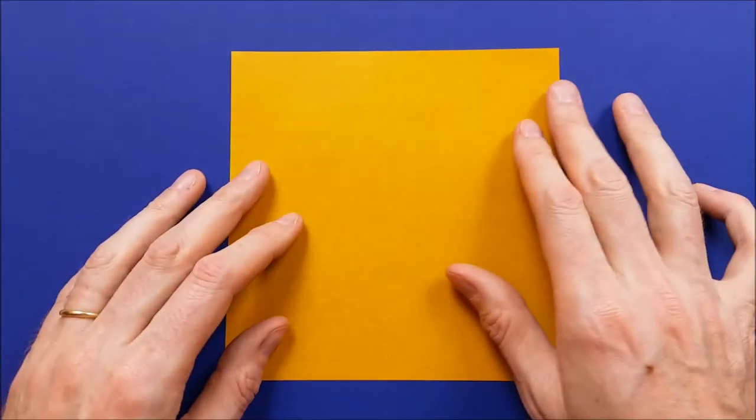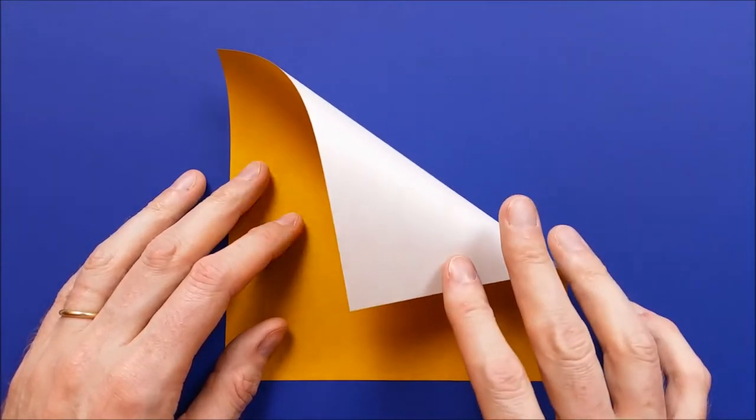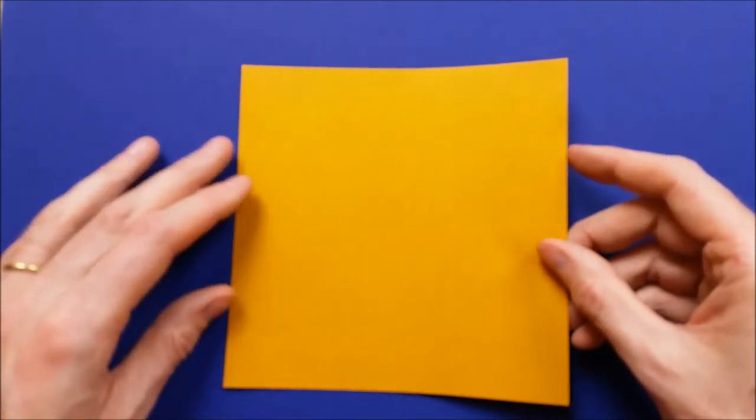To fold the origami Buddha, you need a square piece of paper with a different color on each side. We'll start with the color on top.